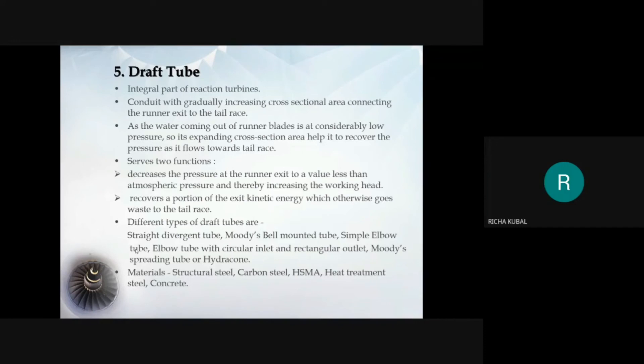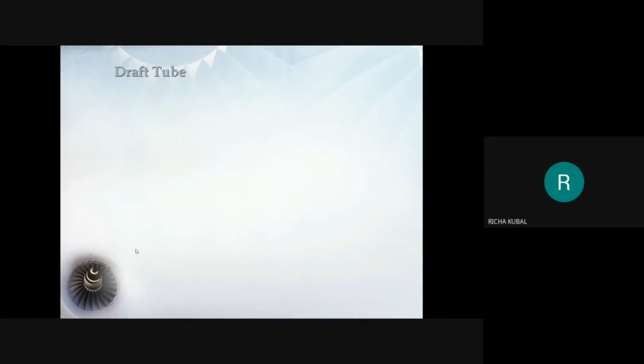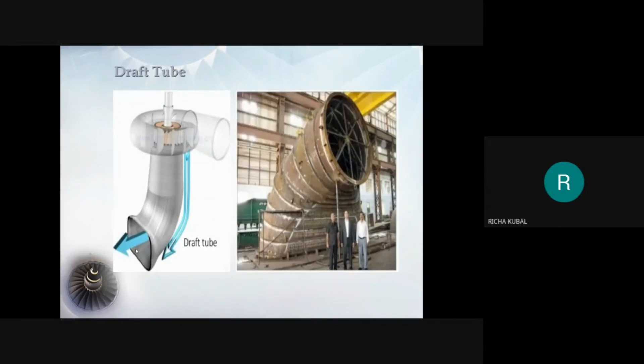The functions of draft tube are: it converts kinetic energy of water at exit of runner into useful pressure energy and water discharges into tailrace at very low velocity, hence increases the pressure head. Draft tube also improves the efficiency of turbine.